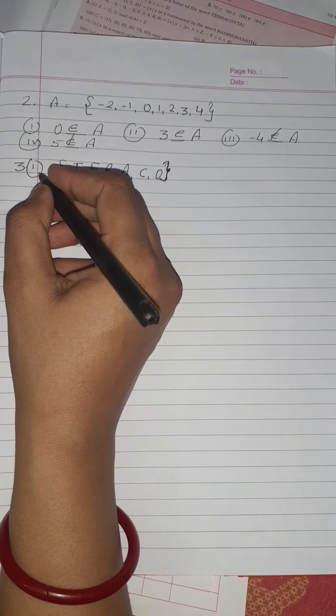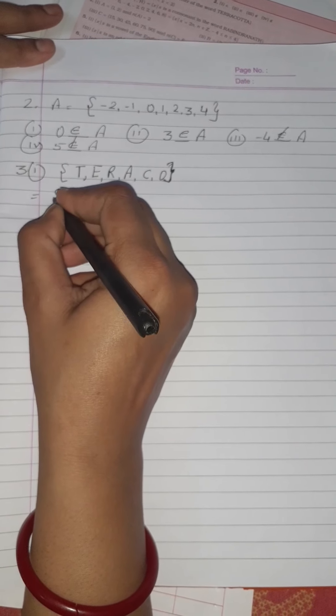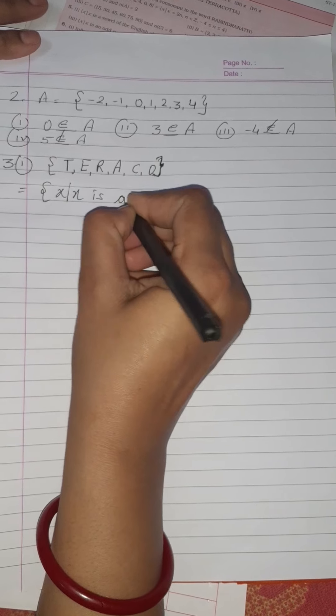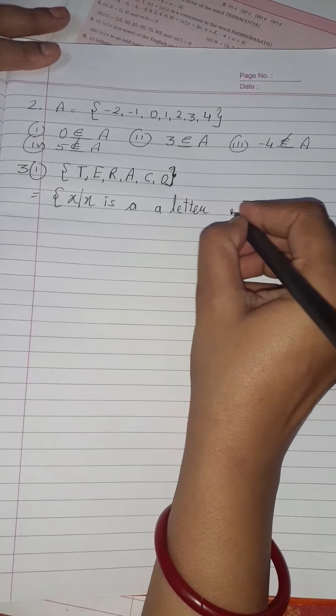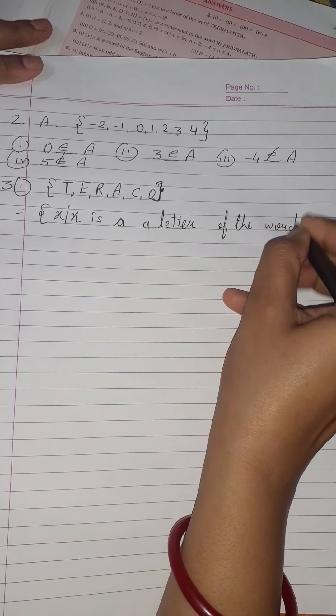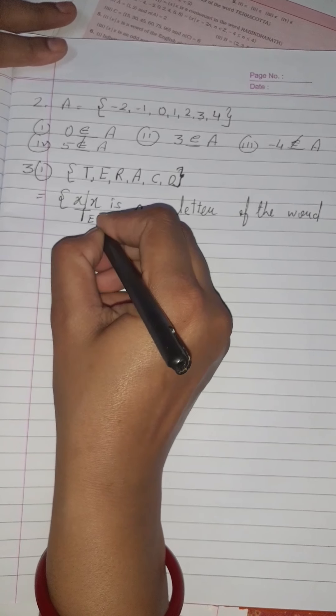Now come to the ruler method. In the ruler method you have to write in this way: x such that x is a letter of the word terracotta. Write the full spelling of terracotta and close the bracket.